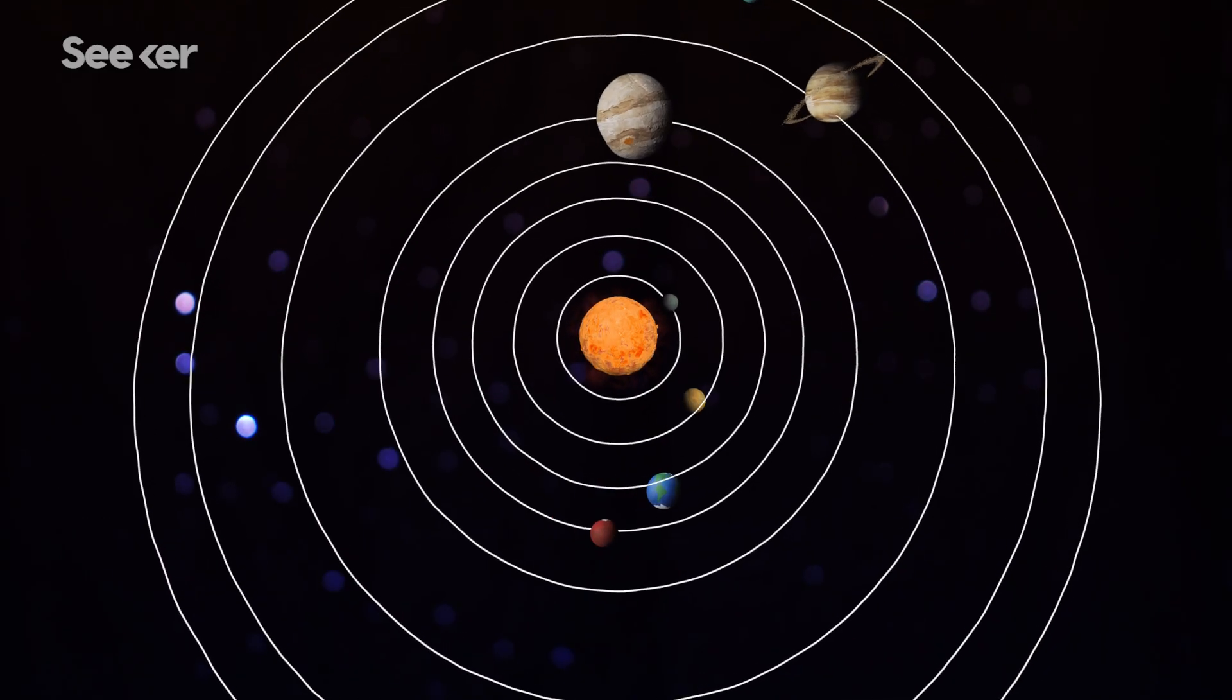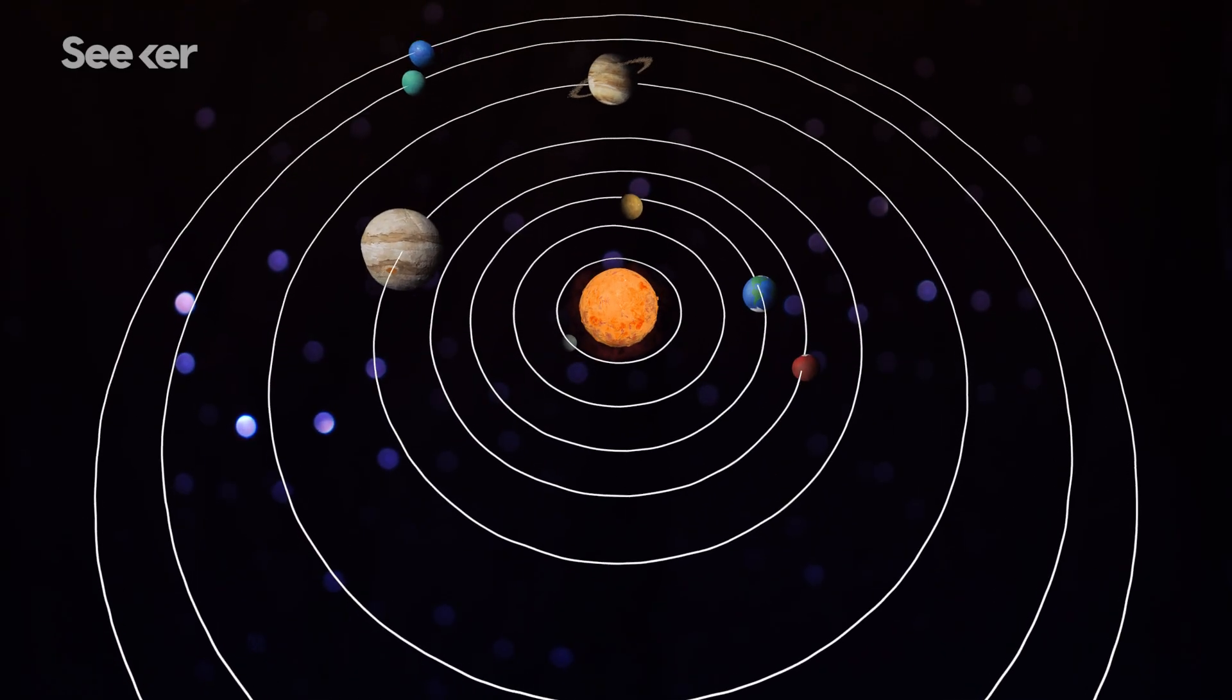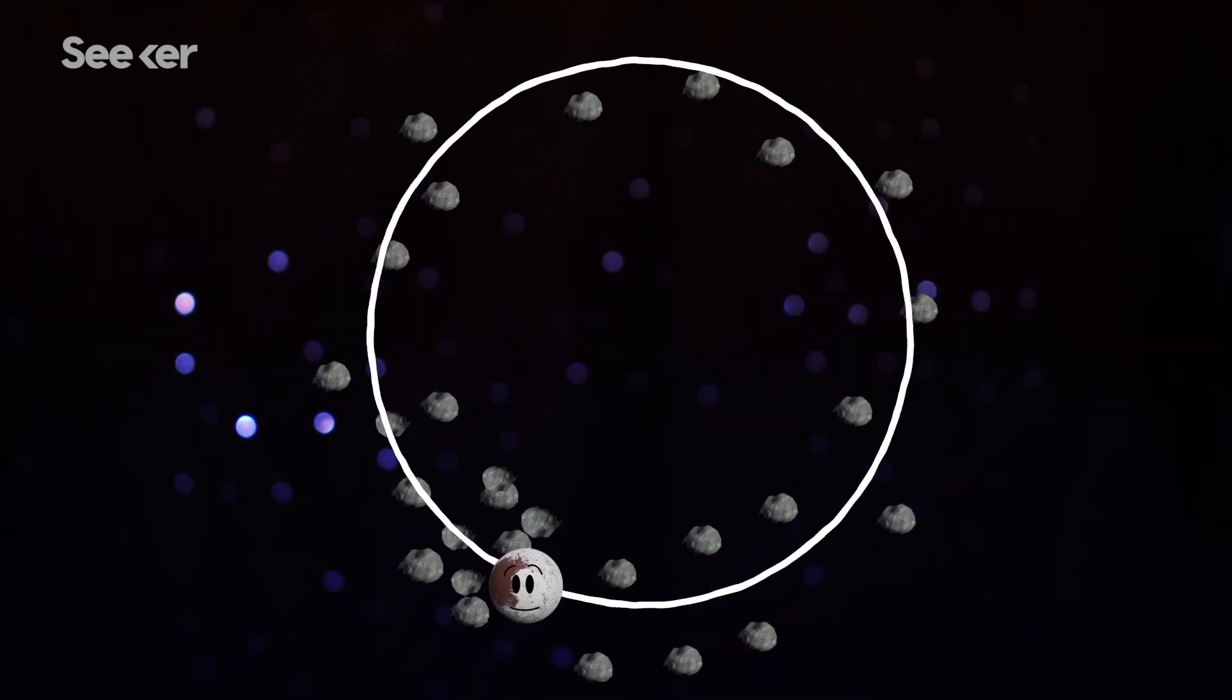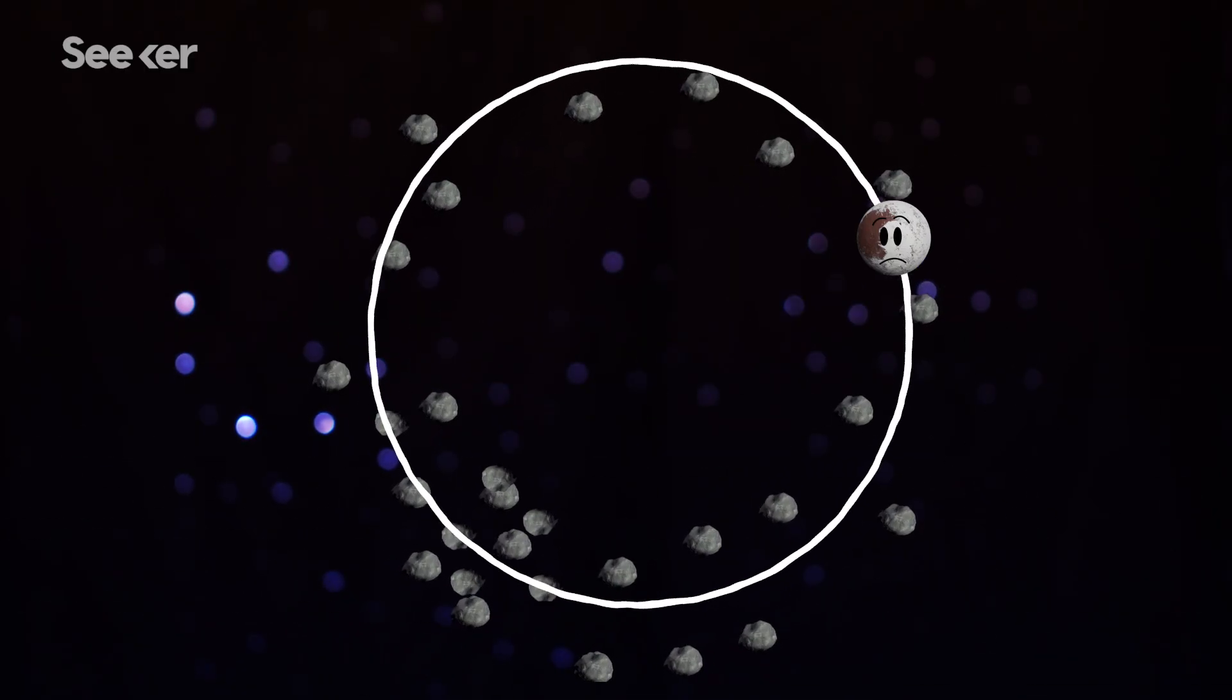You see, the eight other planets are gravitationally dominant, meaning there are no other celestial bodies in their orbital paths. But this isn't the case for Pluto, so he got reclassified as a dwarf planet.